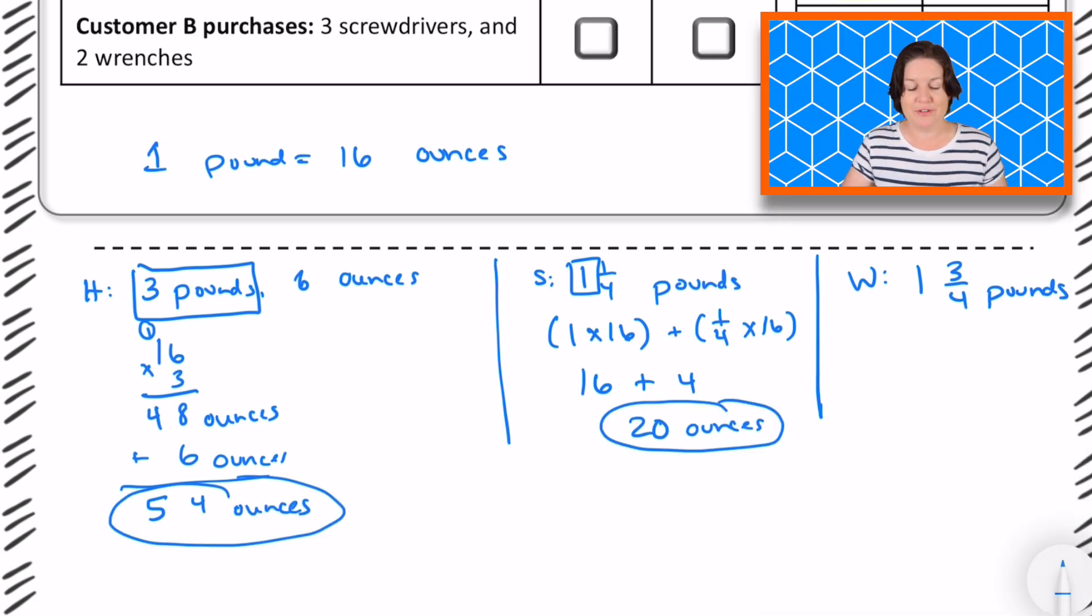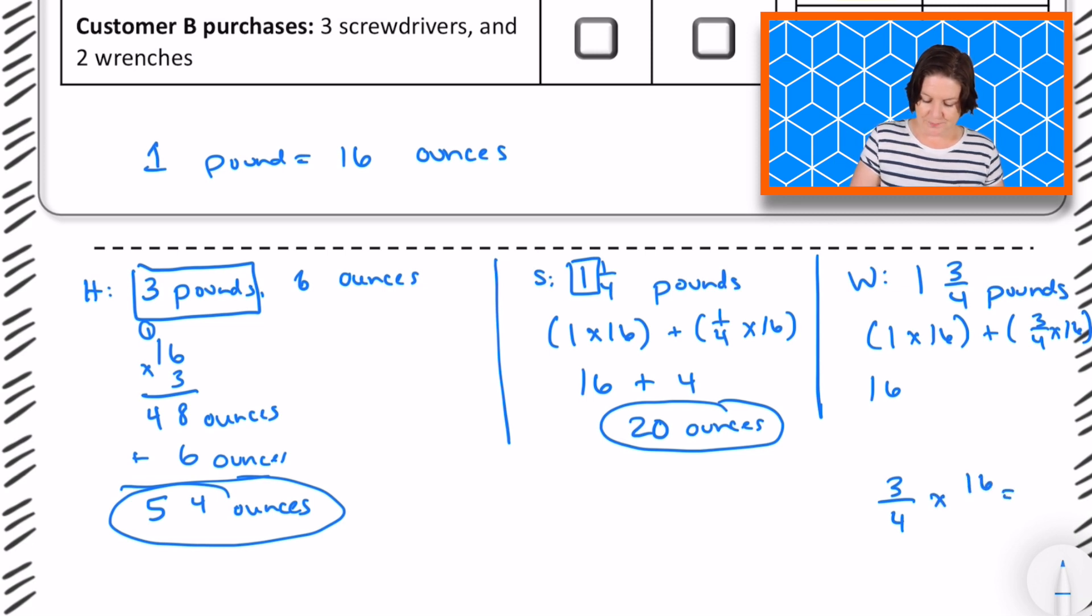And now we have 1 and 3/4 pounds for the wrench. So that would be 1 times 16 plus 3/4 of 16. So 1 times 16 is 16. 3/4 of, I can do that over here, 3/4 of 16 equals 48 fourths or 12. So that would be plus 12, which equals 28 ounces.